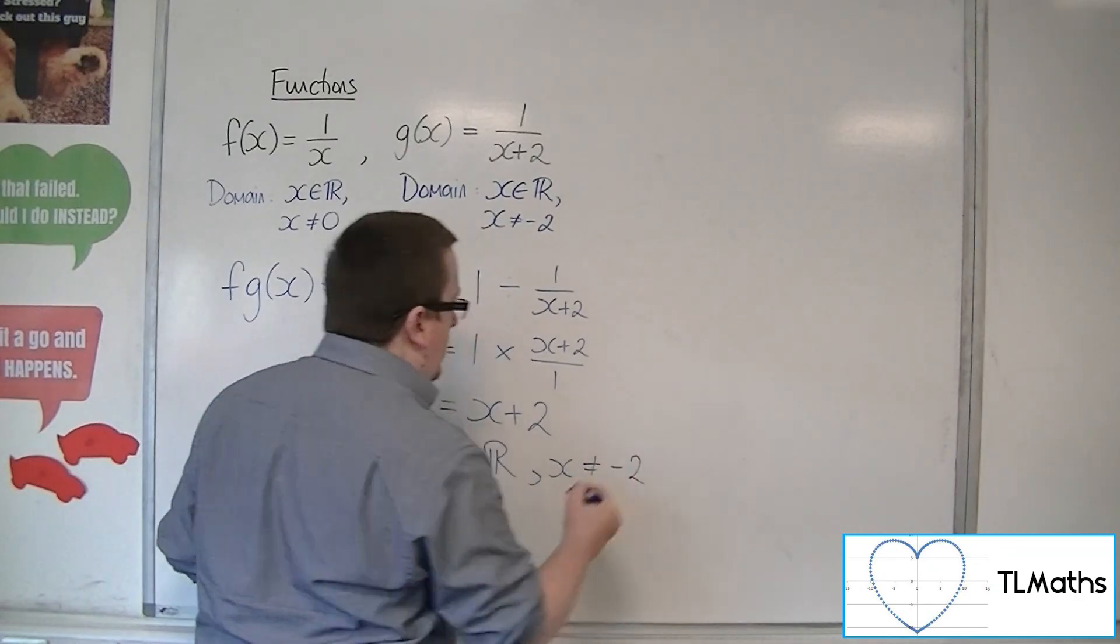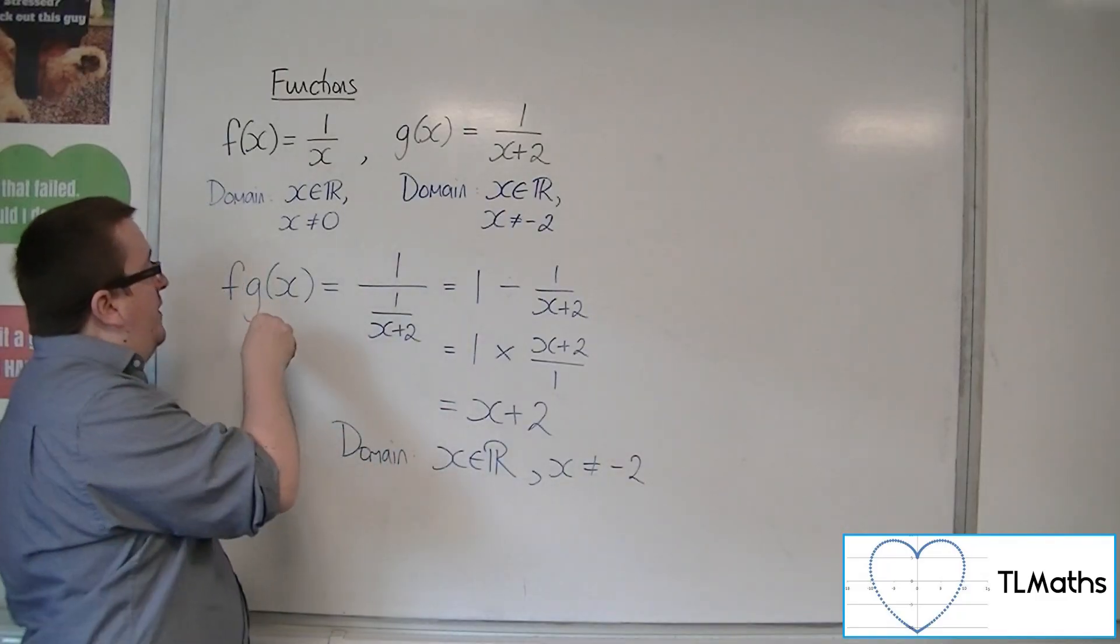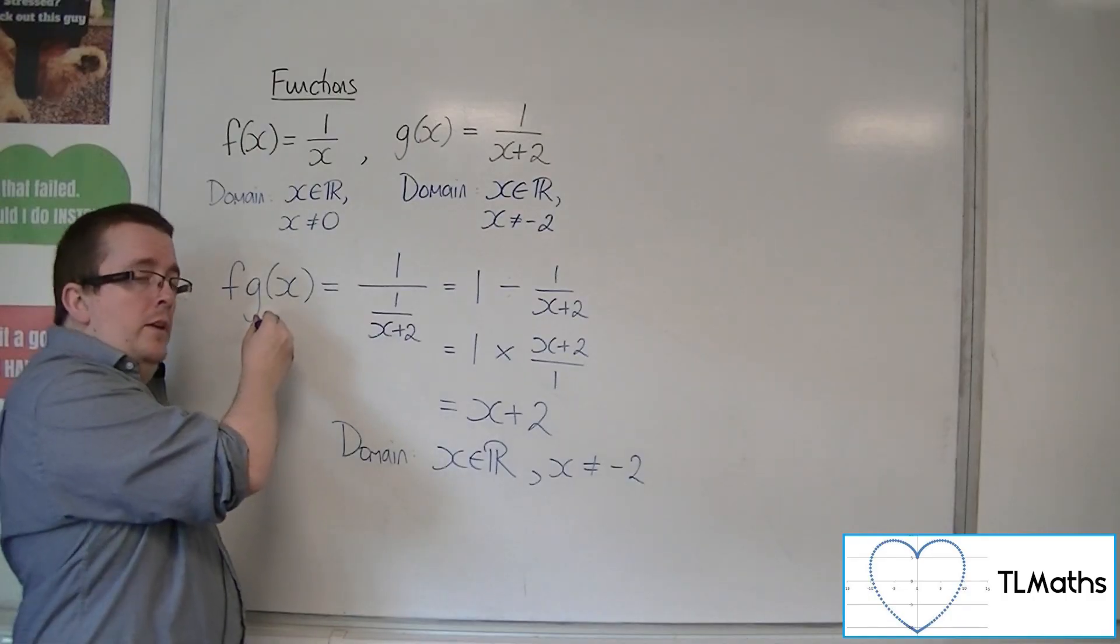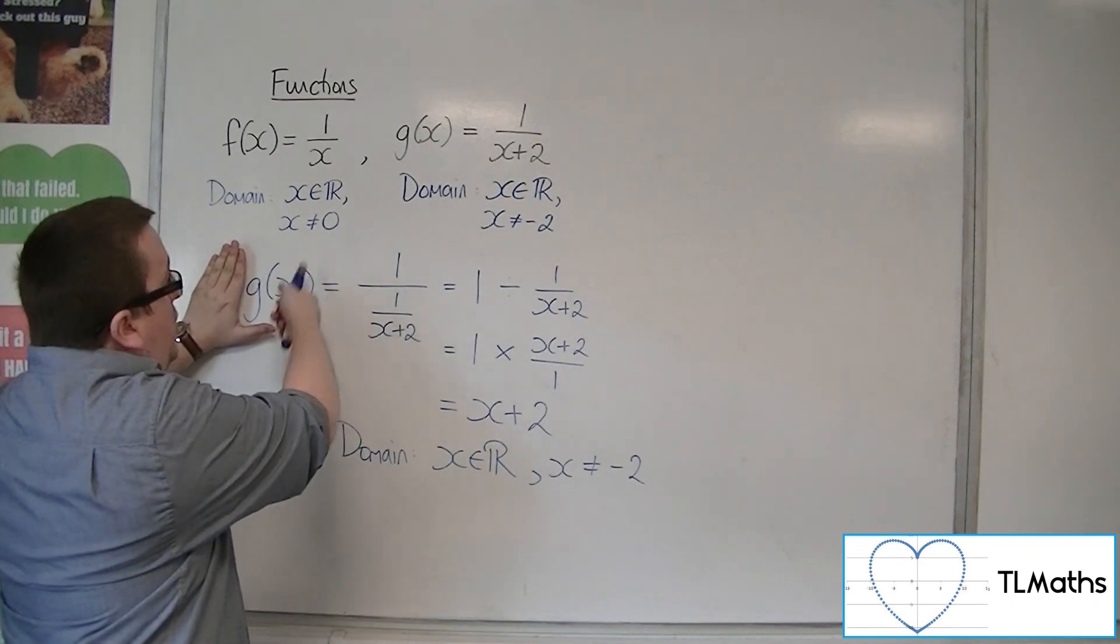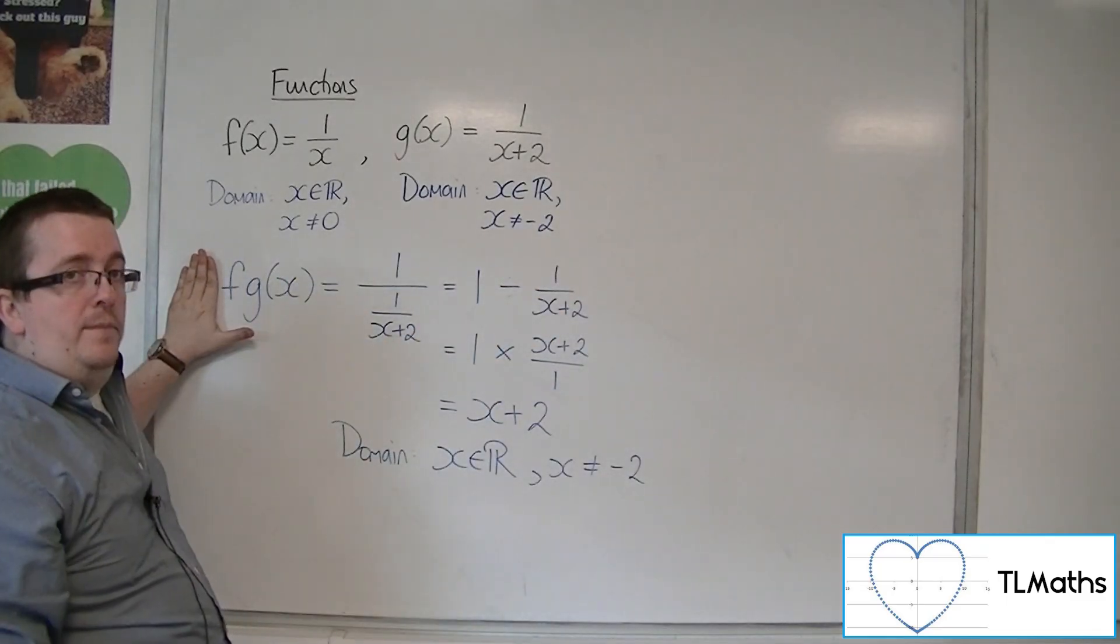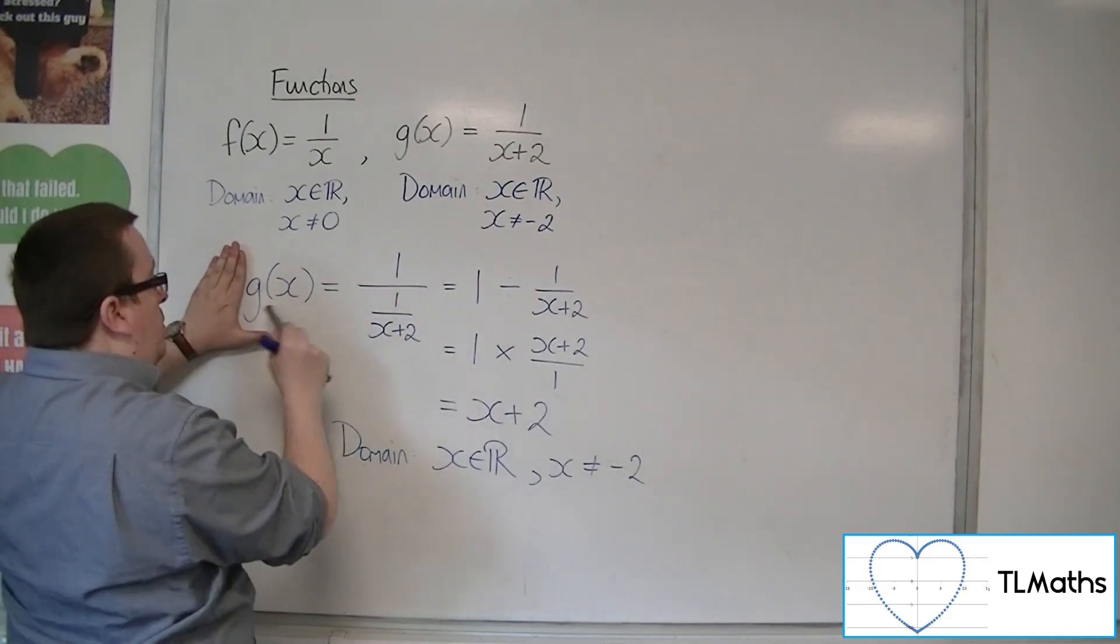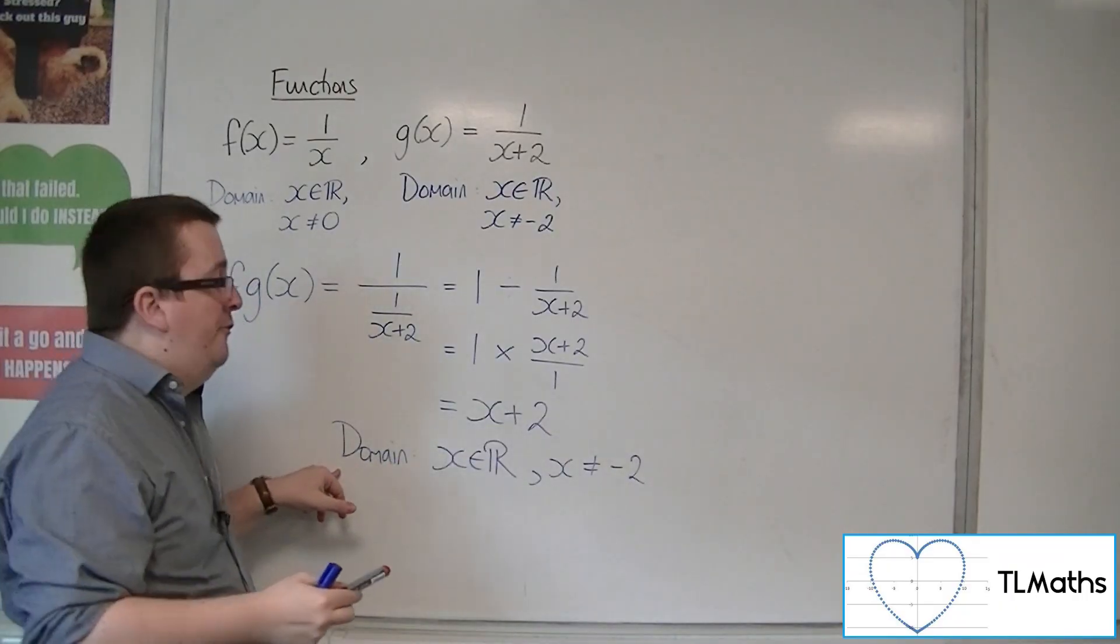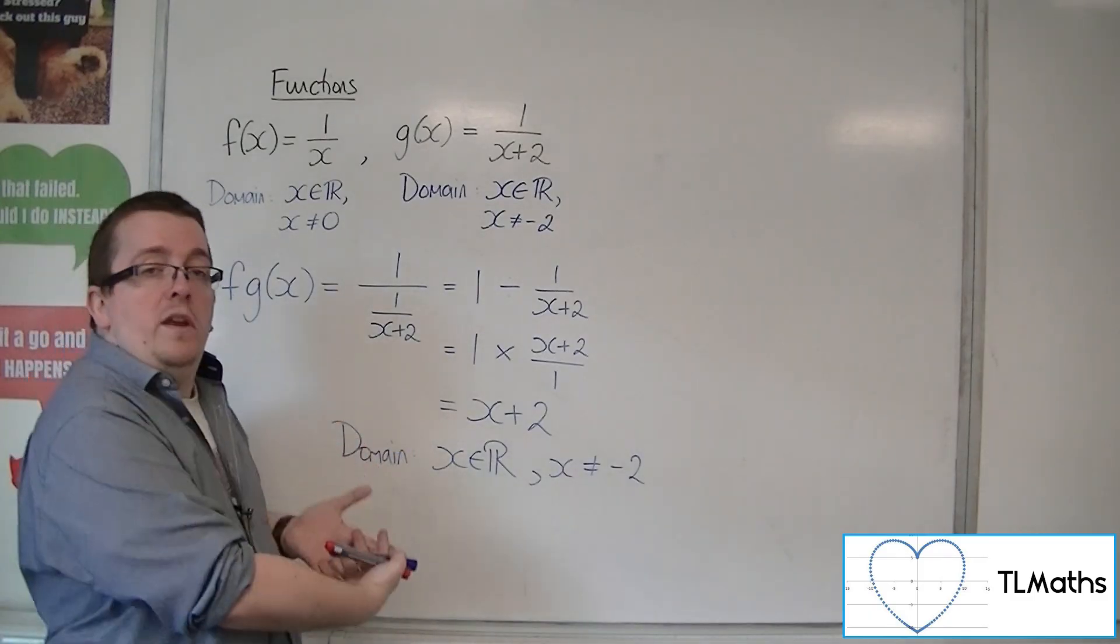This is because I couldn't substitute minus 2 into this because minus 2 didn't work for g of x. So in order to substitute minus 2, I'm effectively substituting minus 2 into g, which can't happen, and then that's getting substituted into f. So it carries the domain of its original first function and whatever the domain is of the final function, kind of like mapped over one another.